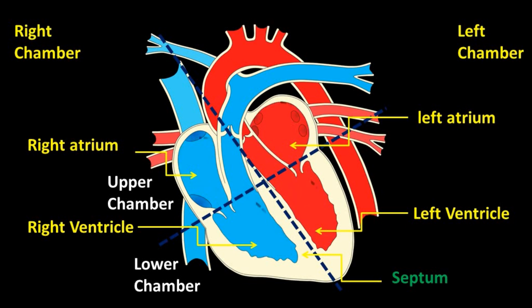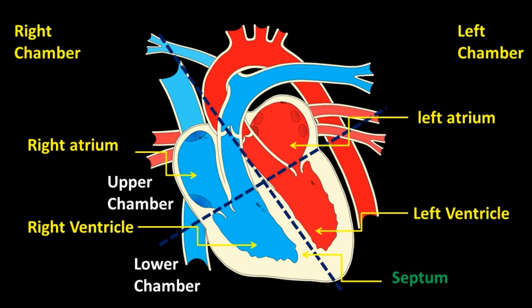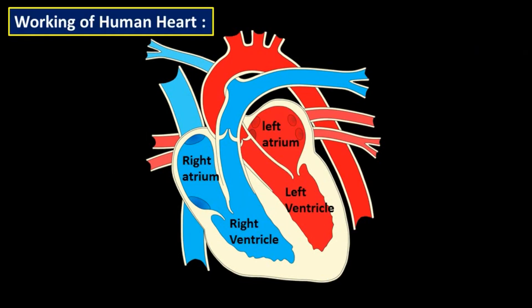Upper chambers are known as atrium and lower chambers are known as ventricle. The four chambers are: right atrium, left atrium, right ventricle, and left ventricle. Now let's look at the working of the human heart.